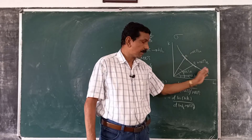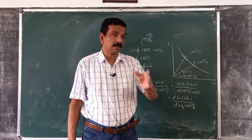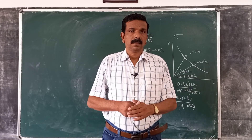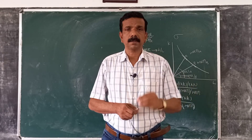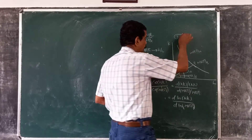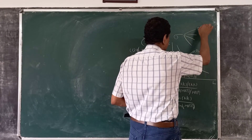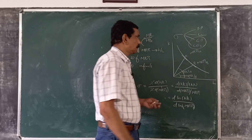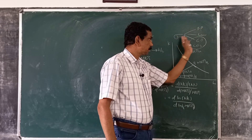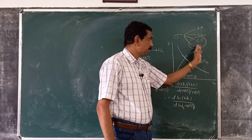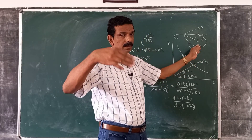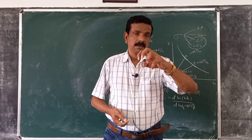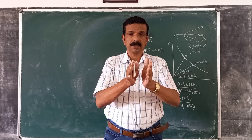As you move from A to B, both MRTS and K/L change, and as they move in the same direction, sigma is always a positive number. If sigma is very high, MRTS does not change much relative to K/L, meaning the isoquant is less curved. If sigma is low, MRTS changes considerably for a change in K/L, so the isoquant is highly curved. Generally, elasticity of substitution changes as you move from one point to another along an isoquant.